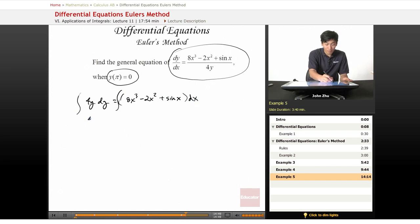we will get 4 over 2y squared equals, and it's just a power rule, 8 over 4x to the fourth minus 2 over 3x to the third plus negative cosine of x. So this will become a negative sign eventually, and we add our constant.